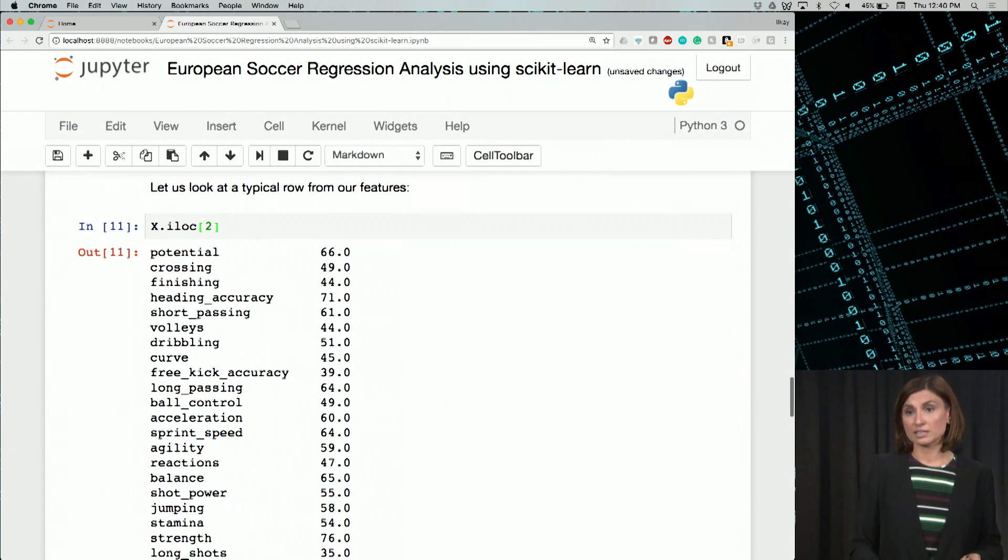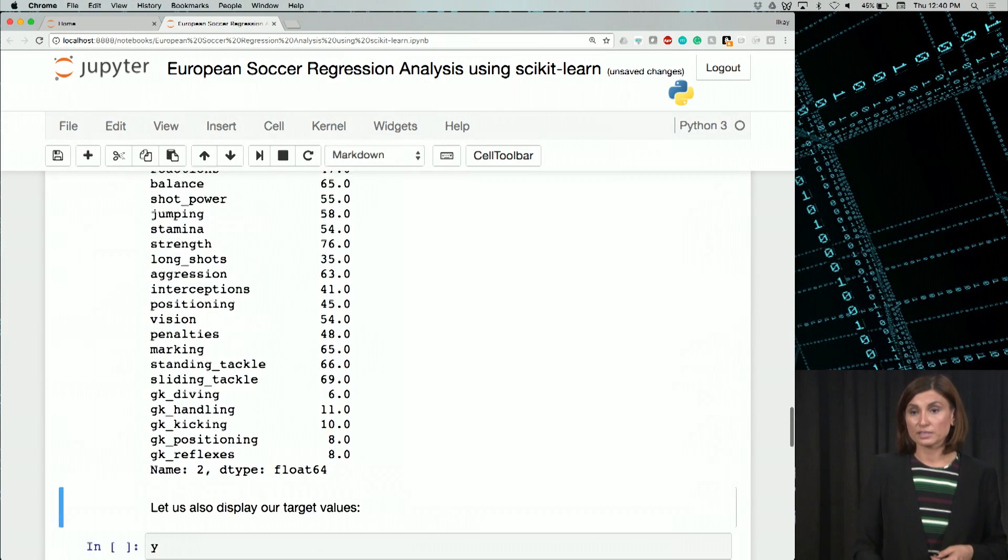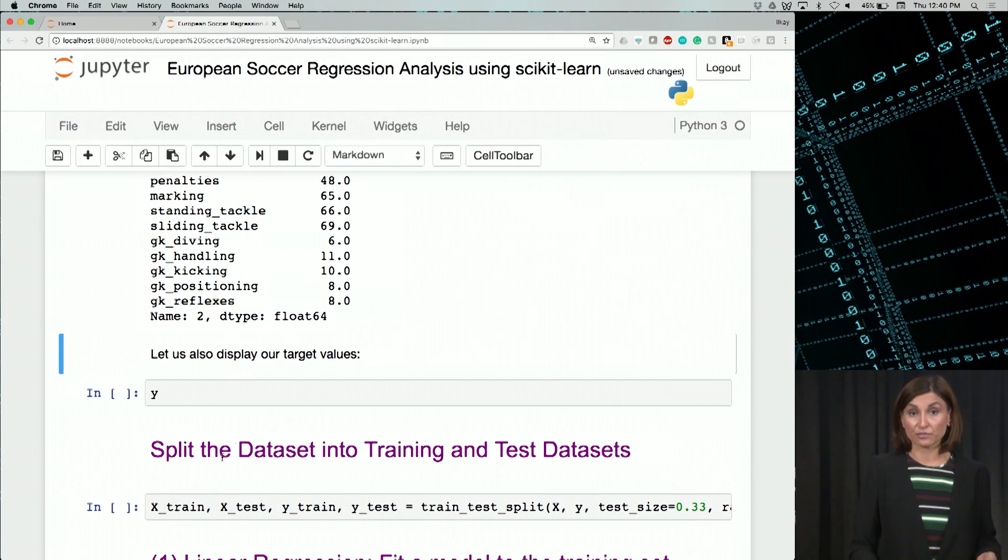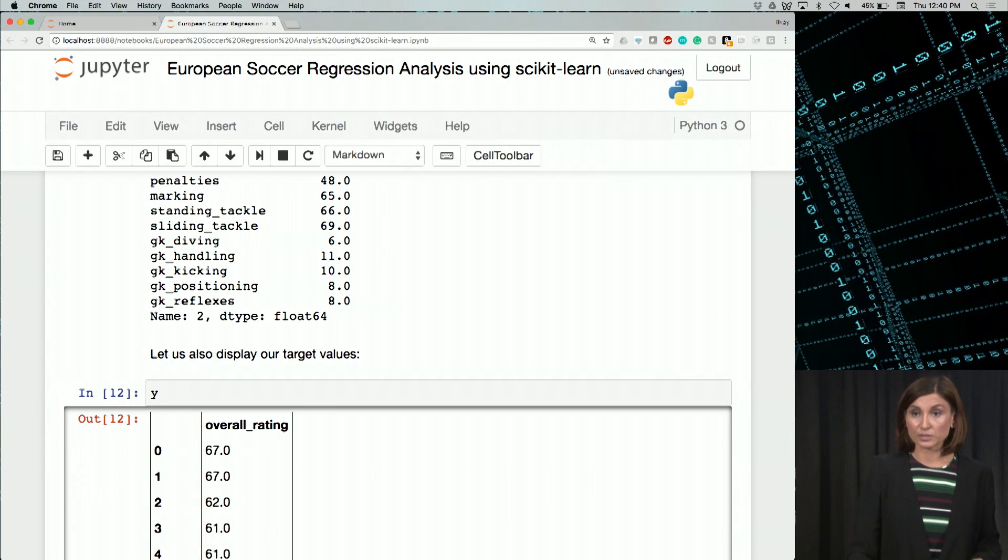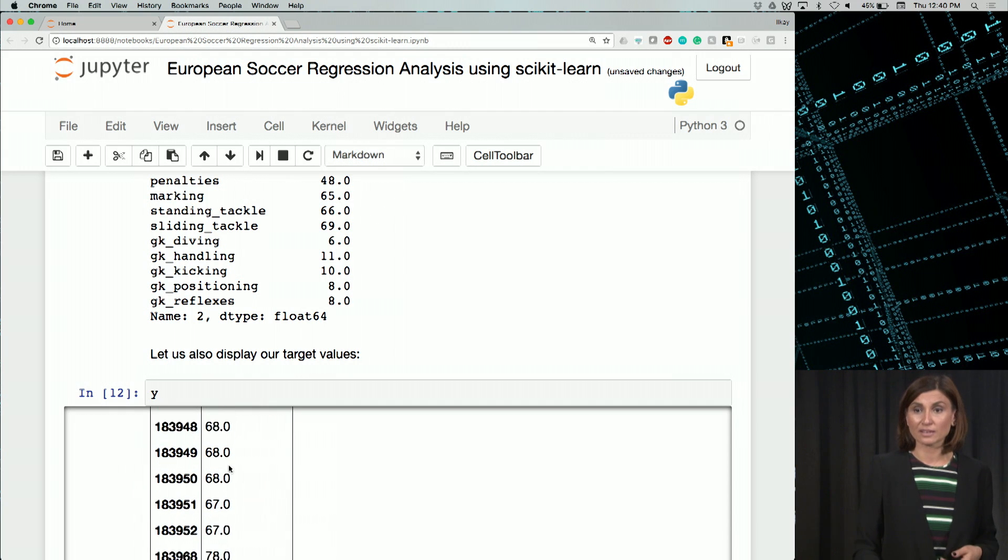We see the values in the x data frame, the potential, crossing, and things like that. We can also display y to see the range of values in it, what kind of overall rating scores exist. And we see that it ranges between 67 to about like 77, things like that. 81 we see there.